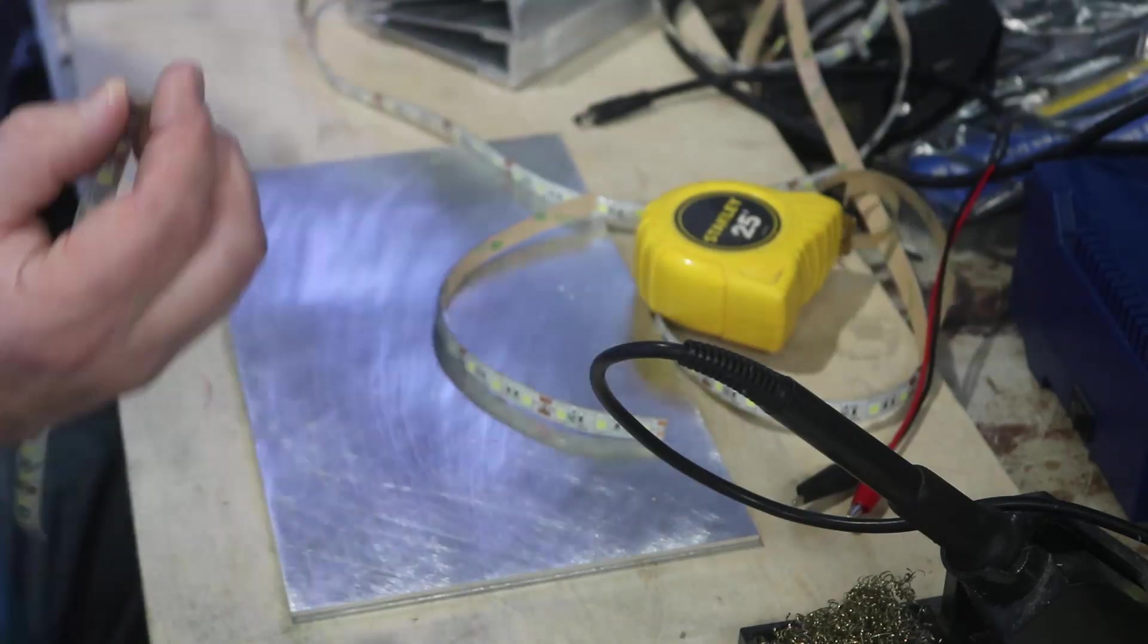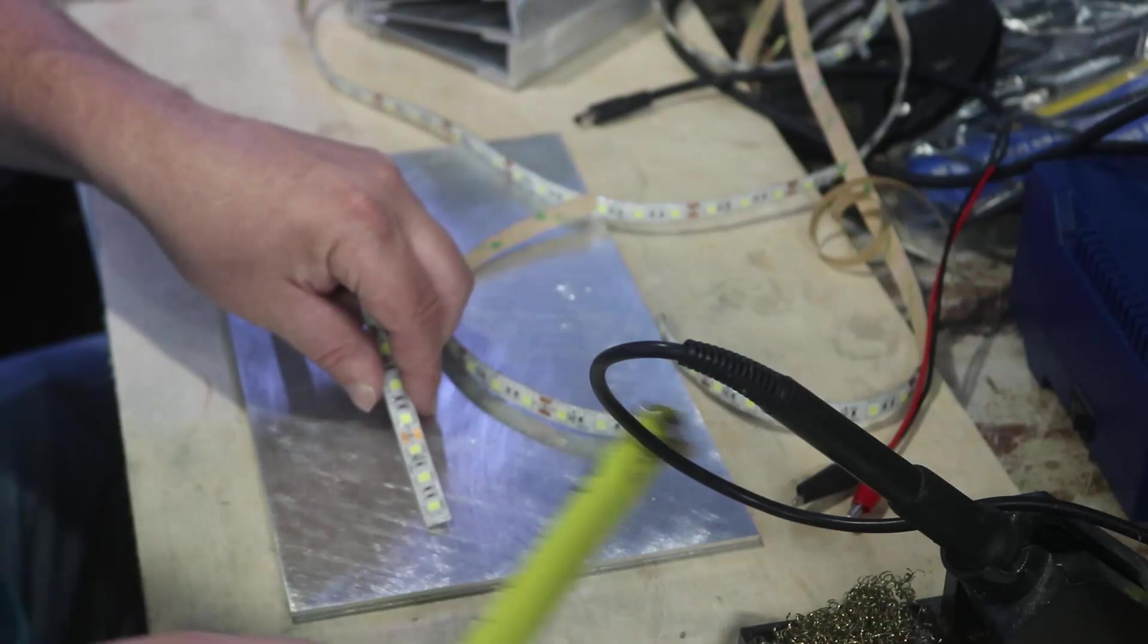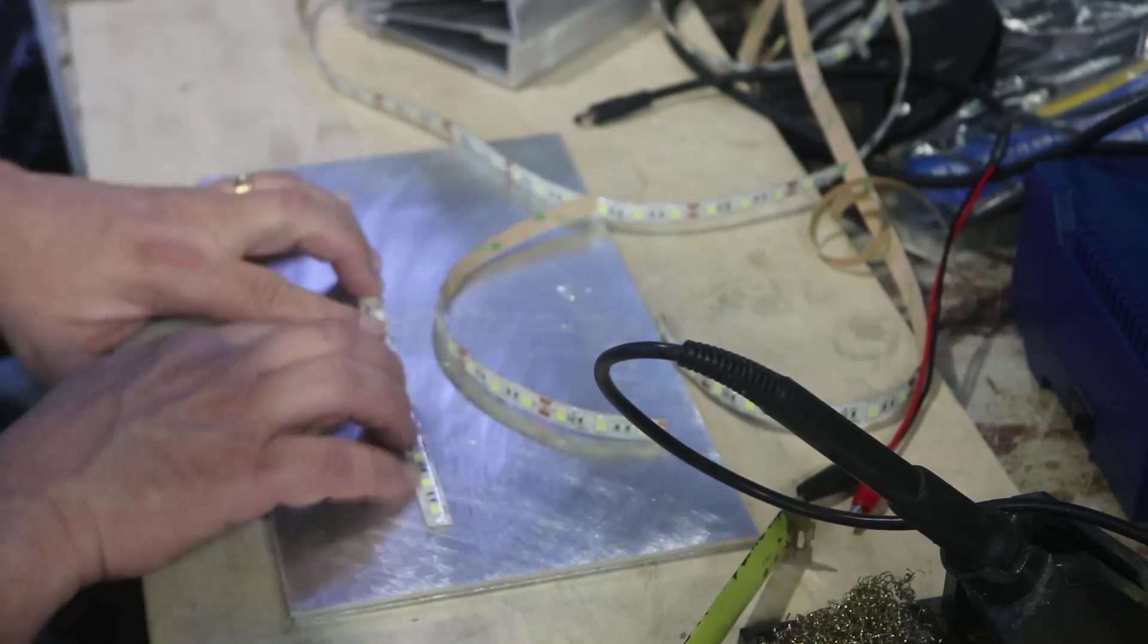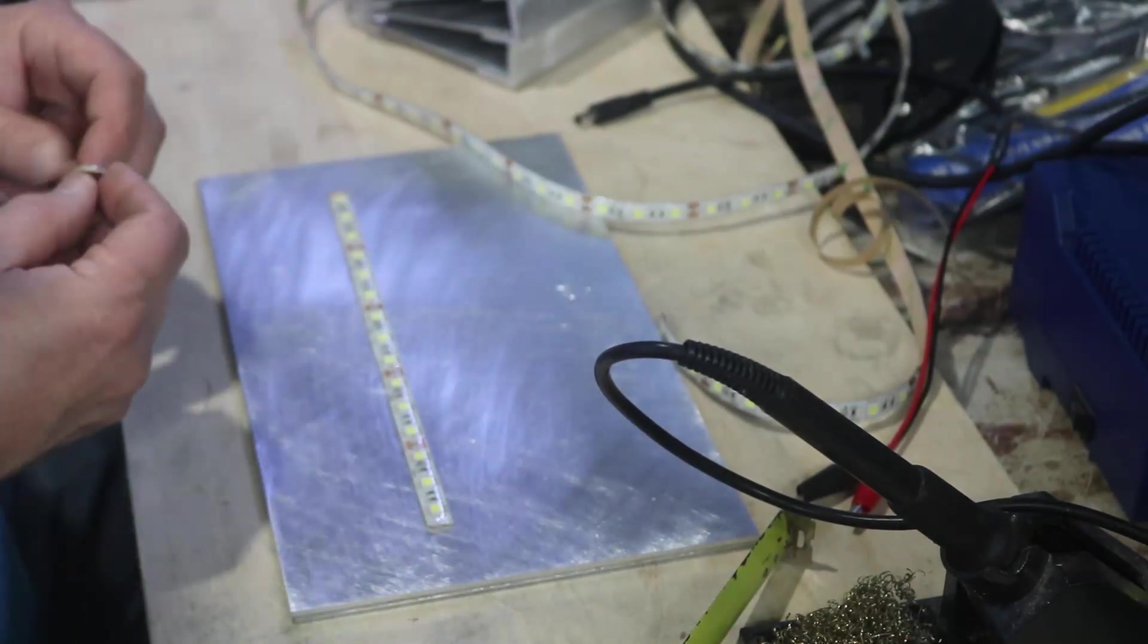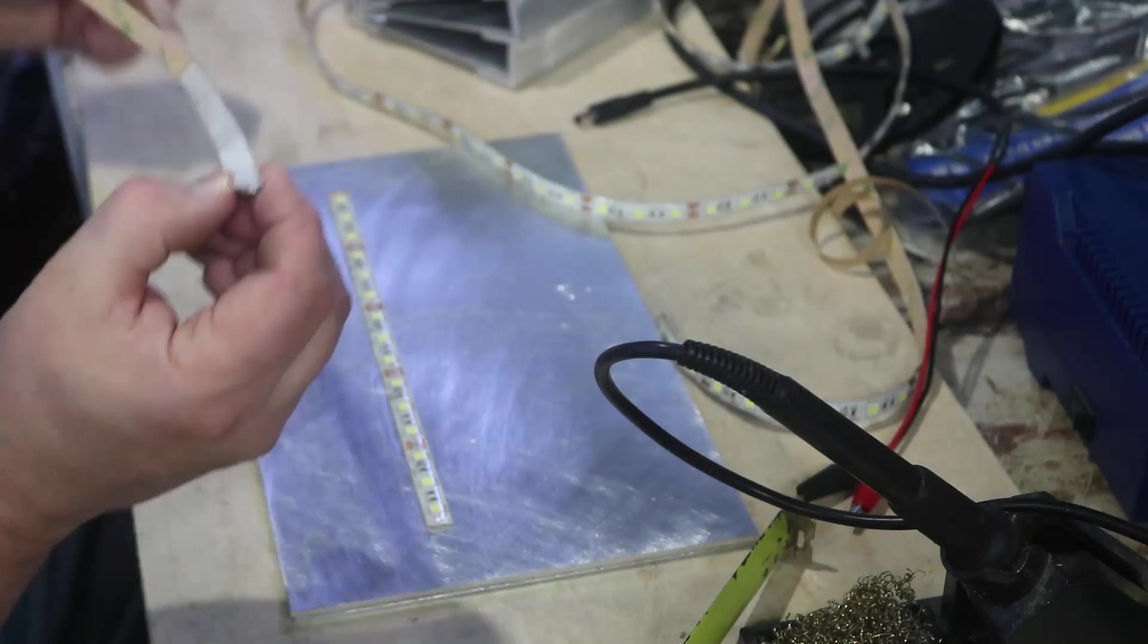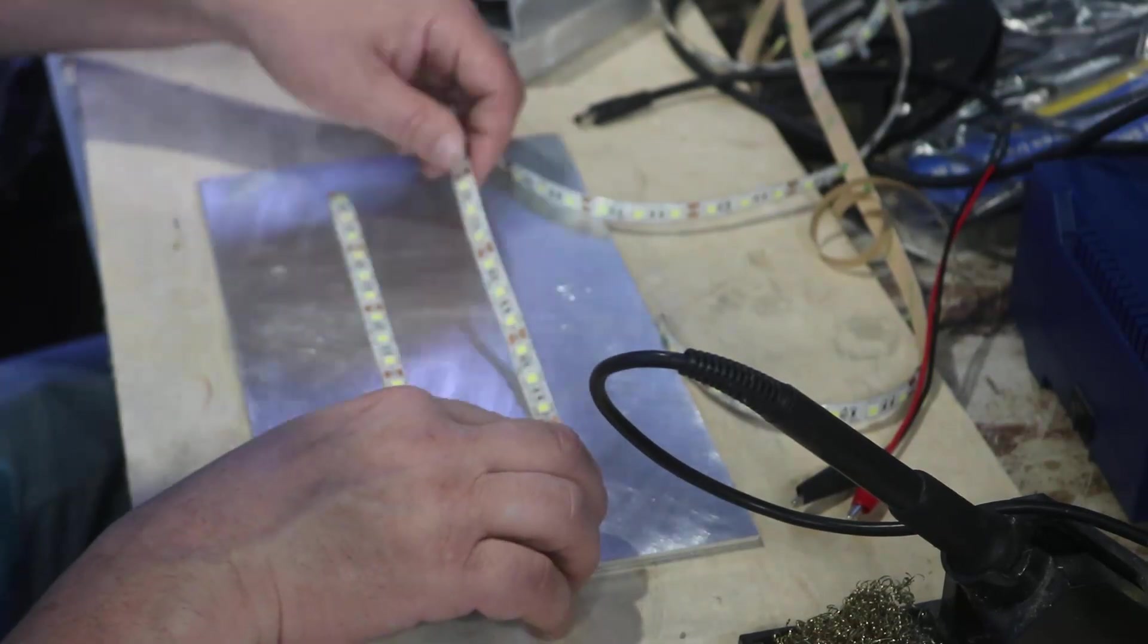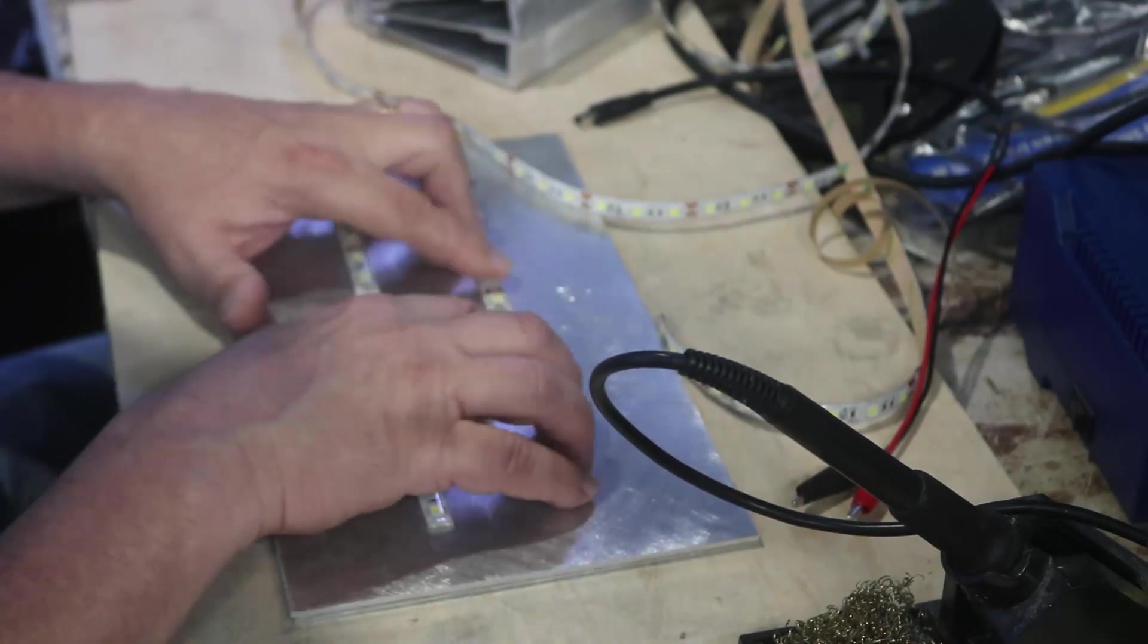Now you see me measuring here but this is pretty much just ballparking it. I just wanted to make sure that they look roughly the same and there's no real magic number as far as where these could go or should go. It's just trying to get them to look relatively even and so the light pretty much gets everywhere.